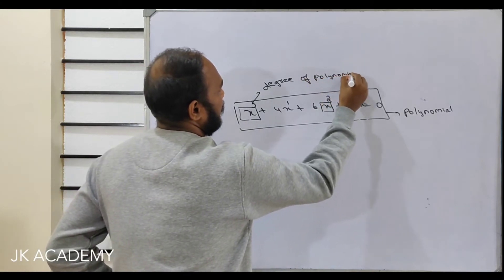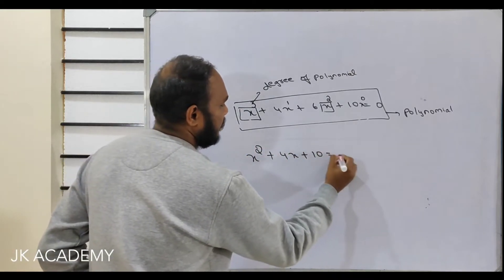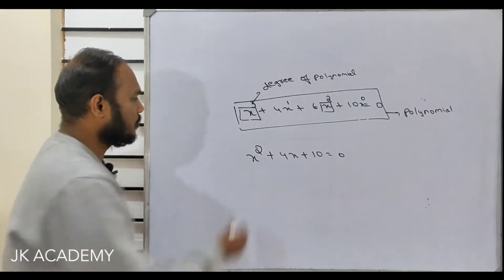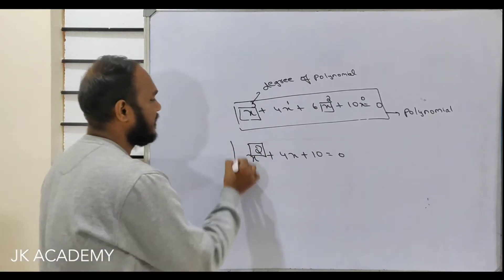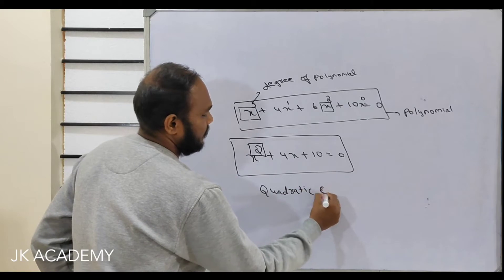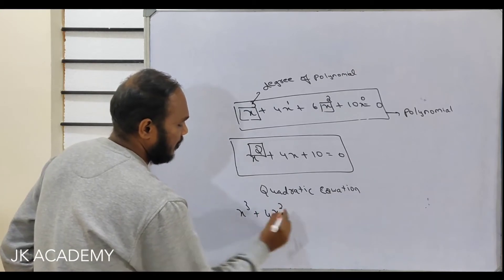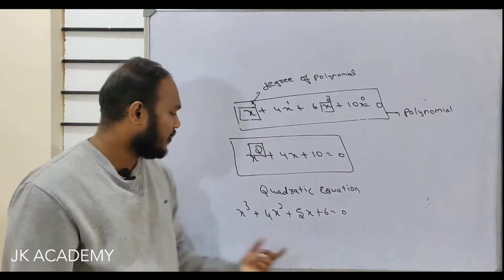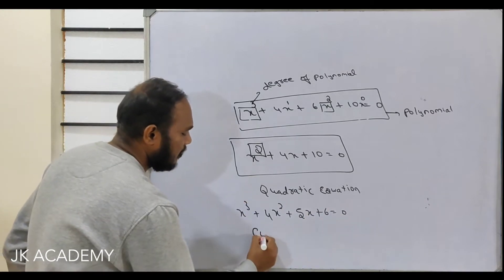If I write x squared plus 4x plus 10 equals 0, the degree of this polynomial is 2. Equations where the degree of the polynomial is 2 are called quadratic equations. If I write x cubed plus 4x squared plus 5x plus 6 equals 0, the degree is 3, and we call it a cubic equation.